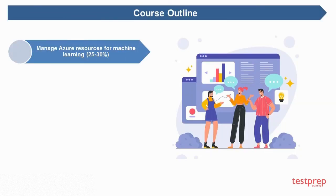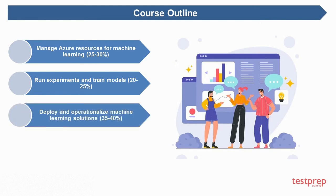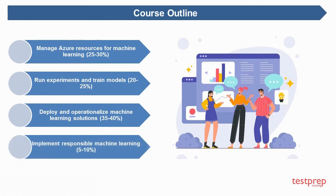Course outline: 1. Manage Azure resources for machine learning — 25 to 30 percent weightage. 2. Run experiments and train models — 20 to 25 percent weightage. 3. Deploy and operationalize machine learning solutions — 35 to 40 percent weightage. 4. Implement responsible machine learning — 5 to 10 percent weightage.